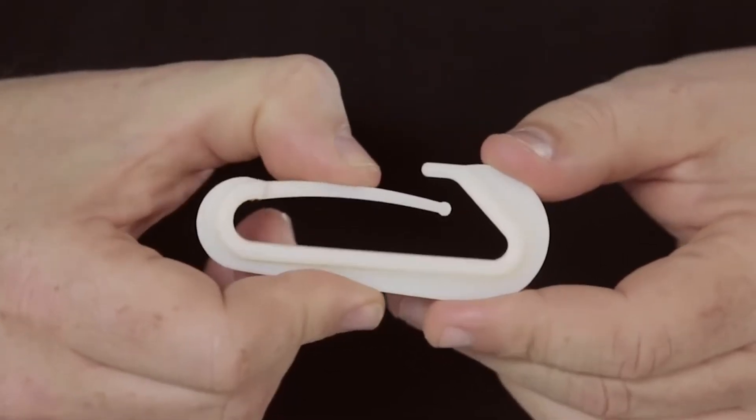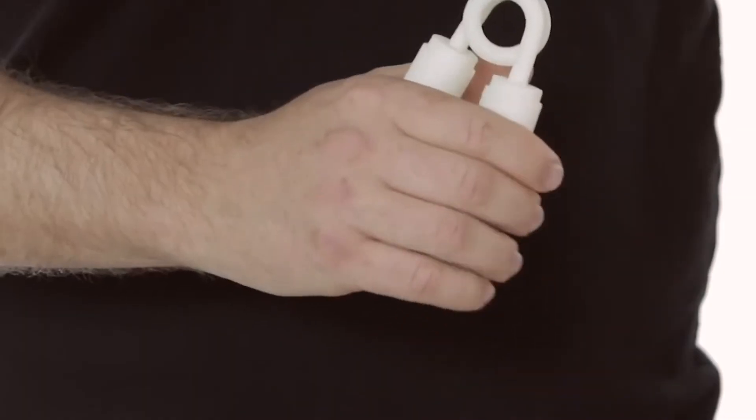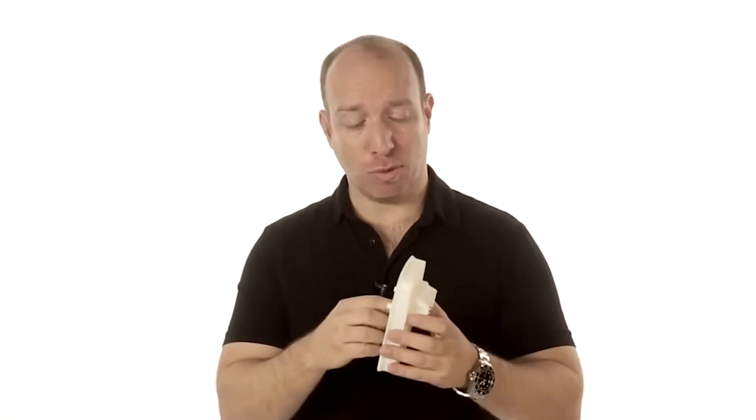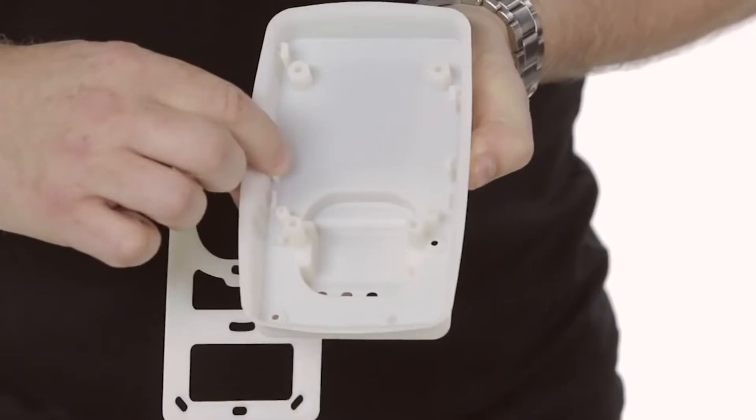Rigger is ideal for simulating polypropylene, so it's great at simulating buckles, clips, snap fits, functional parts and these consumer electronic parts with thin walls and flexible fastening clips.